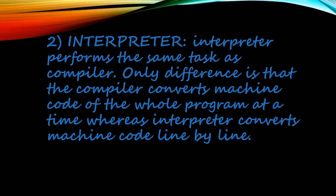Second, interpreter. An interpreter performs the same task as a compiler. The only difference is that the compiler converts the machine code of the whole program at a time, whereas an interpreter converts machine code line by line.